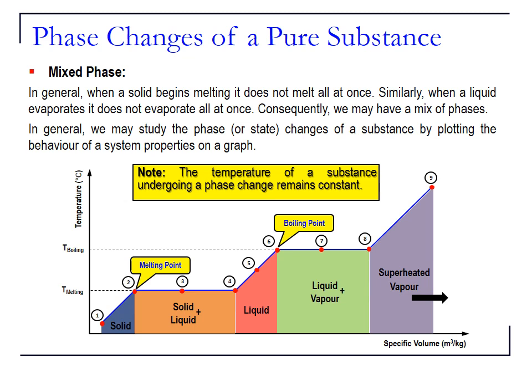Now let's look at a general diagram for any pure substance, showing how its phase changes from solid to liquid and then to vapor. We go through it one step at a time. Starting from the first point, the phase of this pure substance is solid. As we heat it up, the solid receives heat, and its temperature and volume both increase due to thermal expansion.